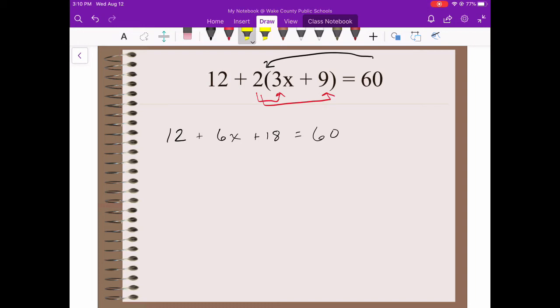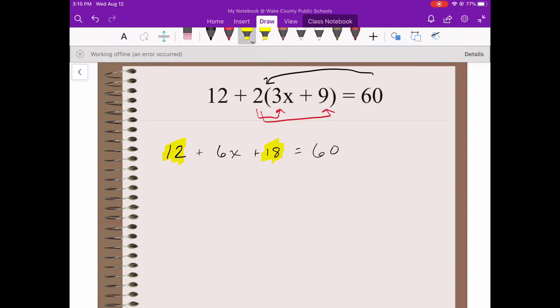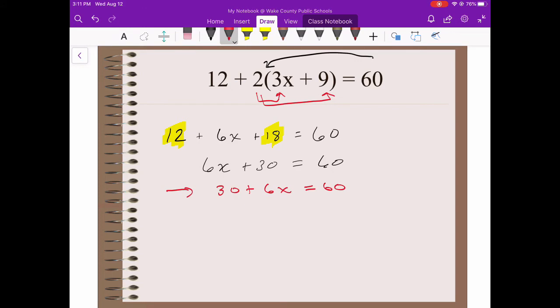Now we can notice that we've got some like terms. How do we know they're like terms? They don't have a variable, so we can put those together into one constant number. So 12 plus 18 is 30, so now I've got 6x plus 30 equals 60. Keep in mind that if you would have written 30 plus 6x equals 60, that's the exact same thing because addition is commutative. I'm just in the habit of having my variable in front of my constant, but it does not matter.